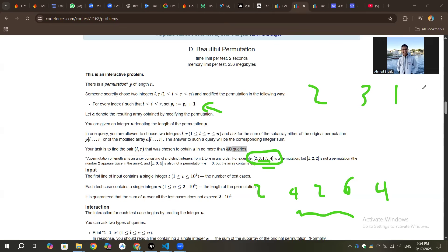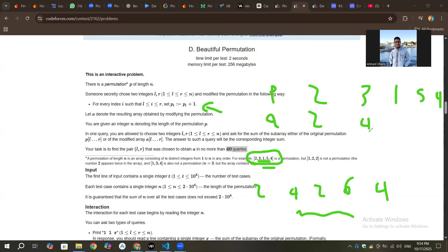2, 3, 1, 5 and 4, this is the permutation. A is the array after he chose the range and increased. So here it will be 2 and this one is the range, this is in the range, this is not. So this is B and this is A.